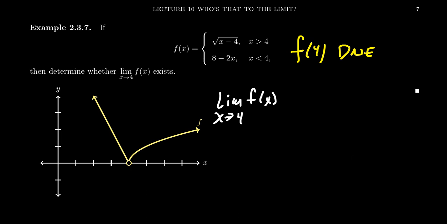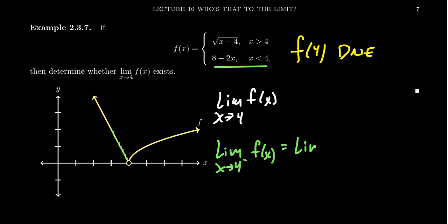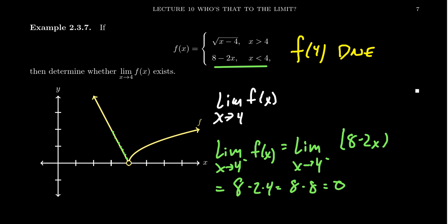It turns out that approaching from the left versus from the right gives different behavior because of the piecewise nature of the function. If we approach to the left of 4, the function thinks you're a line, so the limit as x approaches 4 from the left of f of x will behave like 8 minus 2x. Since this is a linear function, the limit is just evaluation: 8 minus 2 times 4 equals 8 minus 8, which equals 0. So the left-hand limit is 0 — as you approach x equals 4 from the left, y approaches 0.